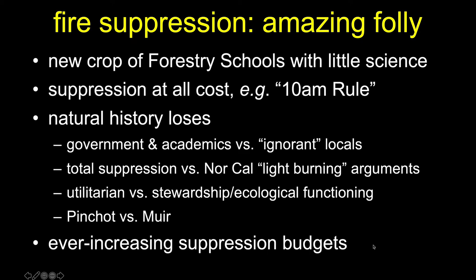When the suppression-at-all-costs argument wins, natural history and ecological functioning lose. There was a battle in the wake of the 1910 fire between government bureaucrats and academics versus the so-called locals who were arguing for a light-burning approach — that we shouldn't completely remove fire, that we should keep using fire akin to what native peoples used, to avoid the most destructive, intense fires. The government and academics won and argued for total fire suppression. It would be 50 years or so before the other side found footing. This was the Gifford Pinchot versus John Muir school of conservation.